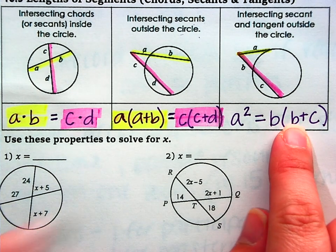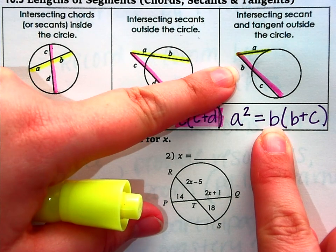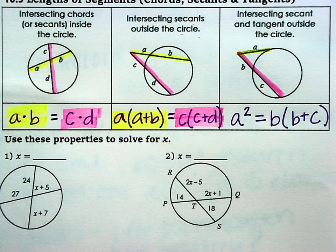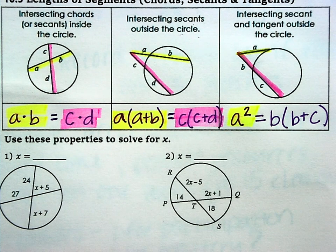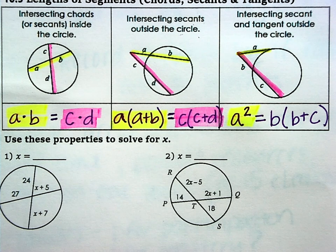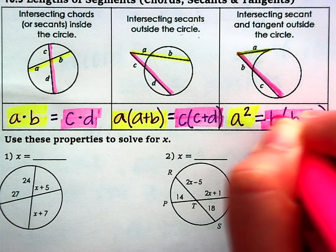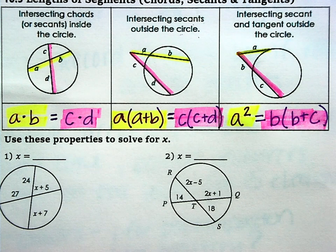So this part is very similar to the secant over here. Take the outside piece, multiply it by both the pieces added together. But for the tangent, all you're doing is taking that one piece that you have and squaring it. So that's how five and six are going to be solved.